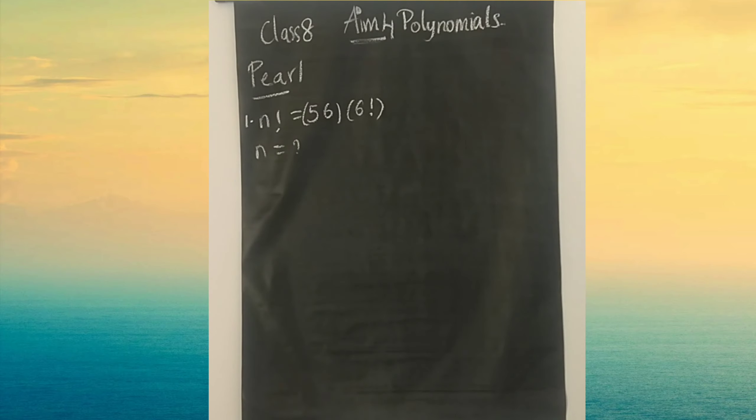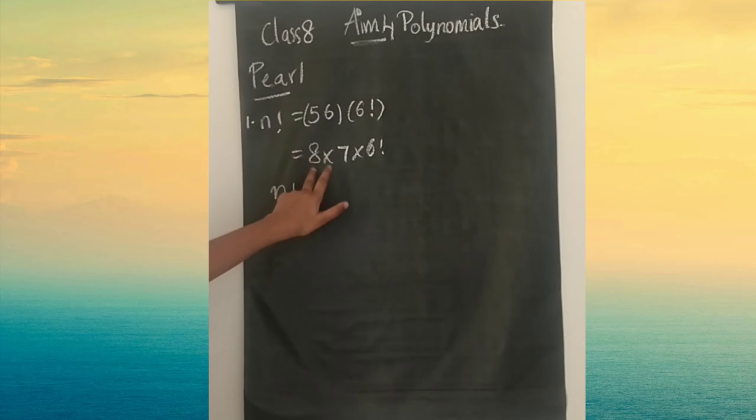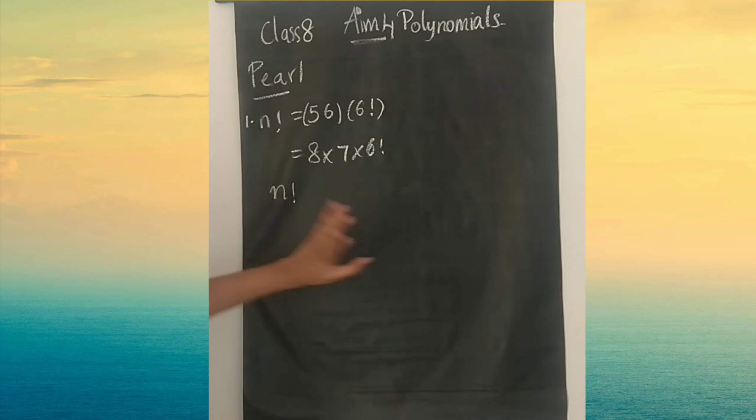In the equation we can see that 56 into 6 factorial. So first let's split 56. 56 is 8 into 7 into 6 factorial, which equals 8 factorial. So n factorial equals 8 factorial. When you remove the factorial, n value is 8. Your option is B.